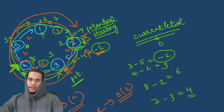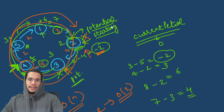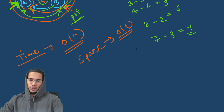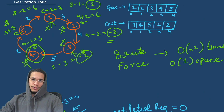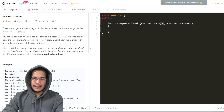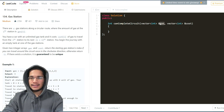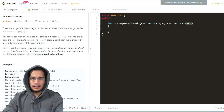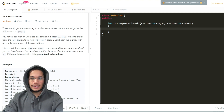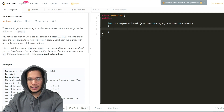Although a little tricky to come up with by yourself, once you understand the logic it's amazing how it does the job in linear time. Let's move on to writing the code. We have a vector gas representing the gas at every station and cost representing the cost to move to the next station, and we need to return an integer denoting the index of the station from where we can start to complete the entire tour.